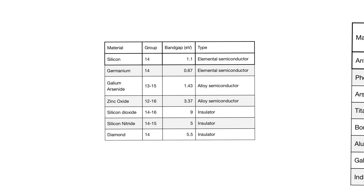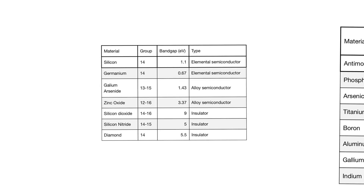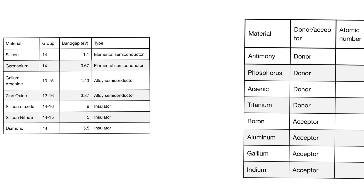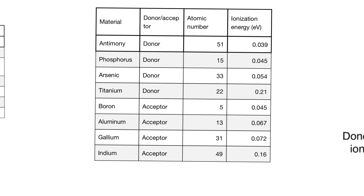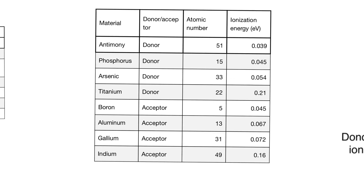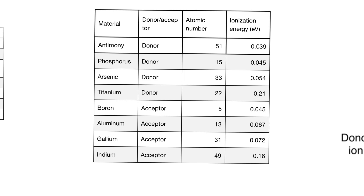So what distinguishes semiconductors from insulators is another factor. The thing that makes semiconductors interesting is not that they have an intermediate conductivity, and it's not that their conductivity is a function of temperature. It is the fact that their conductivity is extremely sensitive to impurities.